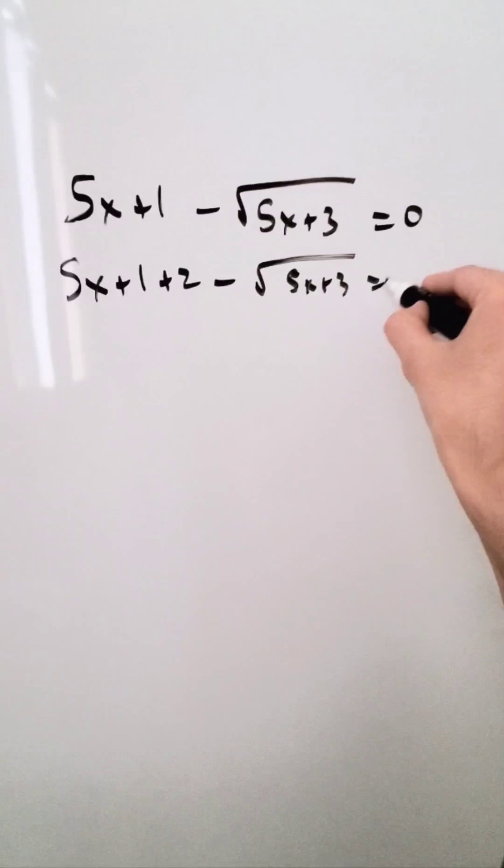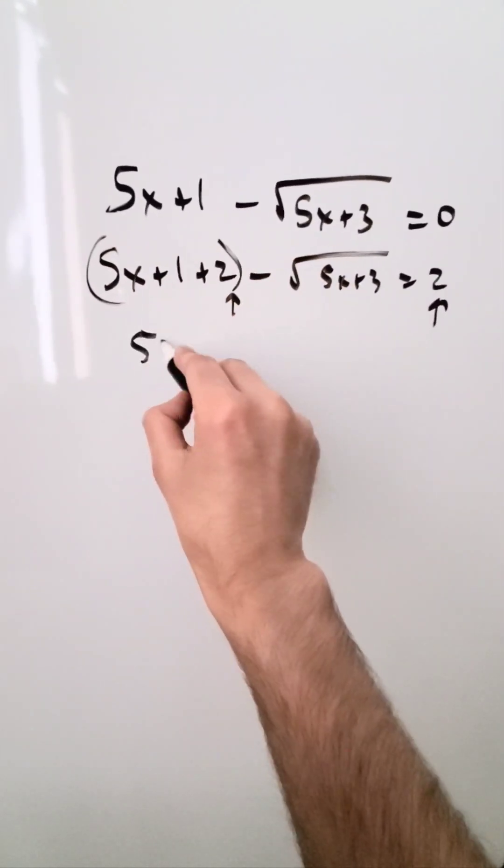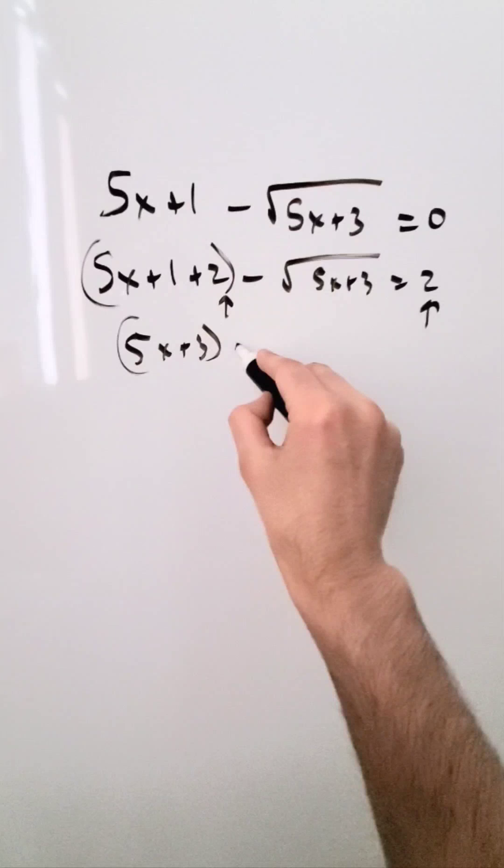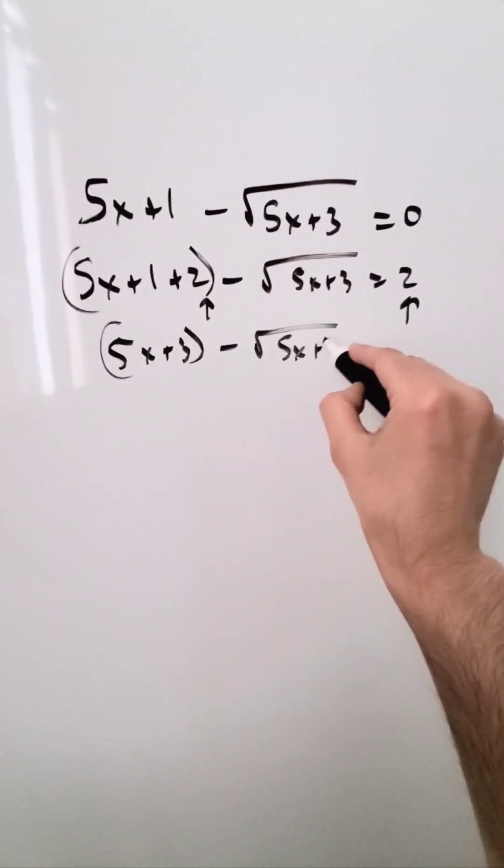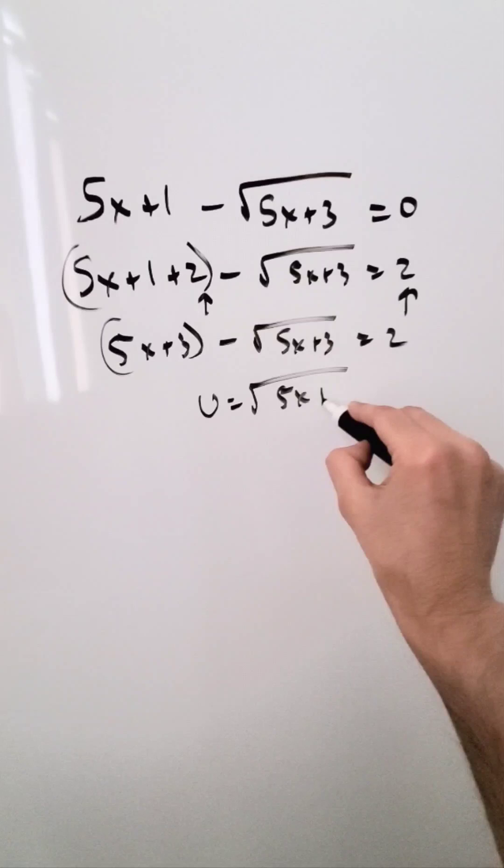I've added 2 here and 2 here. I will now group this. I have 5x plus 3 minus square root 5x plus 3 equals 2. Substitution: u is equal to square root 5x plus 3.